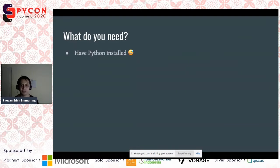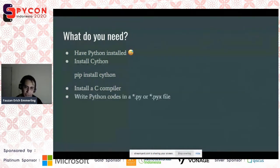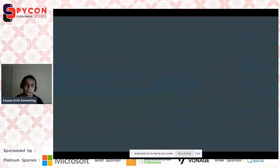So what do you need? First of all, of course, you need to have Python installed. I do not recommend using Python 2 anymore even though Cython still supports it, but it's end of life already, right? Use Python 3. And then next thing, you need to install Cython. This is very simple. All you need to do is install Cython. Then you need to install a C compiler. This depends on your machine. I'm running on a Mac, so I use GCC. And then you need to write Python codes in a .py or .pyx file.